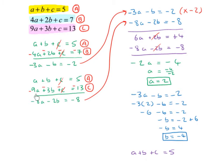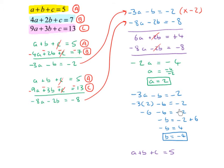Taking the two equations in a and b, I multiply the top equation −3a − b = −2 by −2, giving 6a + 2b = 4. Adding this to −8a − 2b = −8, the b terms cancel: 6a − 8a = −2a, and 4 − 8 = −4. So −2a = −4, giving a = 2. Substituting a = 2 into −3a − b = −2: −6 − b = −2, so −b = 4, giving b = −4.